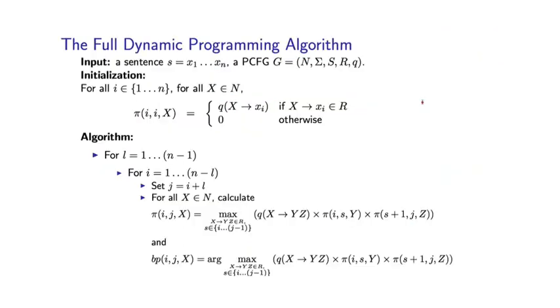So here's the final algorithm, which puts all of these ideas together. So the input to the algorithm is a sentence, so that's a sequence of n words, x1 through xn. And in addition, we have a PCFG, which consists of non-terminals, terminal symbols, a start symbol, rules, and a set of parameters. And we're assuming, of course, that this PCFG is in Chomsky-normal form.